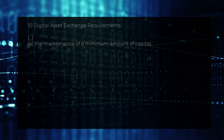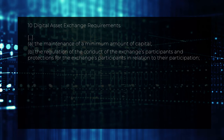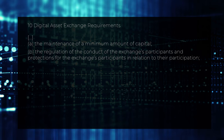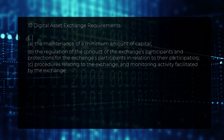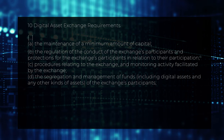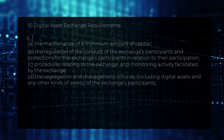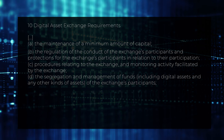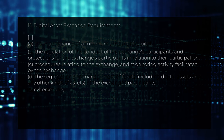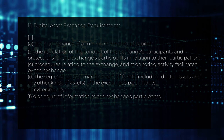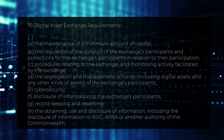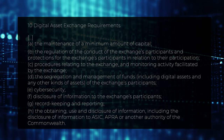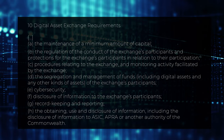The bill outlines licensees' obligations: A — the maintenance of a minimum amount of capital; B — the regulation of the conduct of the exchange's participants and protections for them in relation to their participation; C — procedures relating to the exchange and monitoring activity facilitated by it; D — the segregation and management of funds including digital assets and any other kinds of assets of the exchange's participants; E — cybersecurity; F — disclosure of information to the exchange's participants; G — record keeping and reporting; H — the obtaining, use and disclosure of information, including the disclosure of information to ASIC, APRA, or another authority of the Commonwealth.